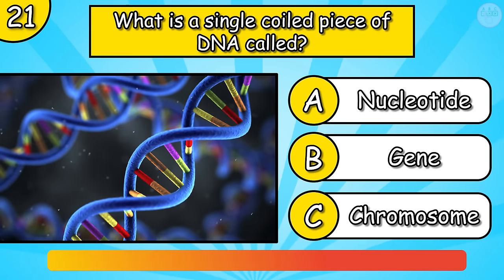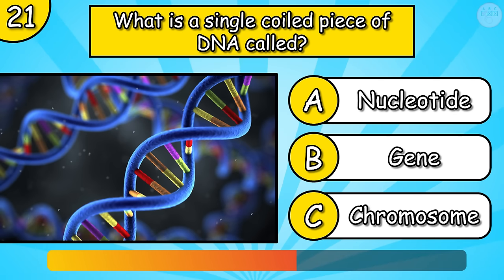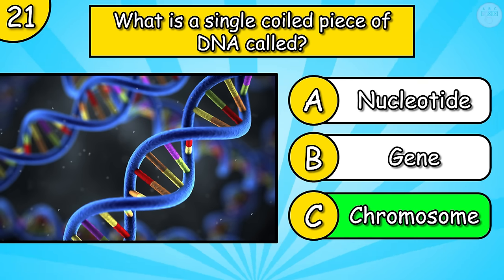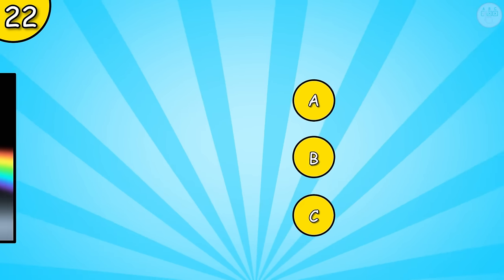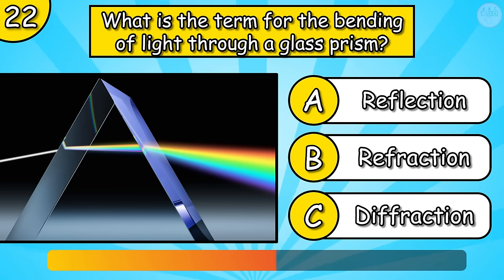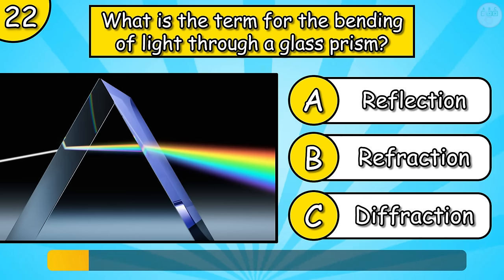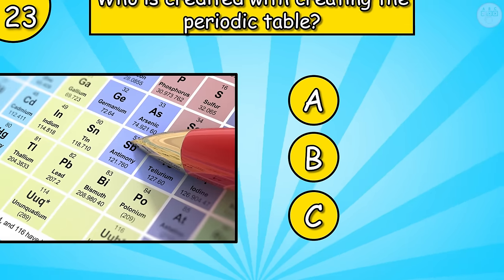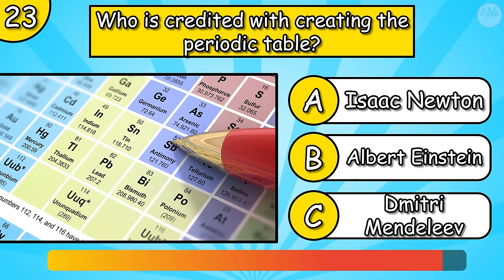What is a single coiled piece of DNA called? What's the term for the bending of light through a glass prism? Who is credited with creating the periodic table?